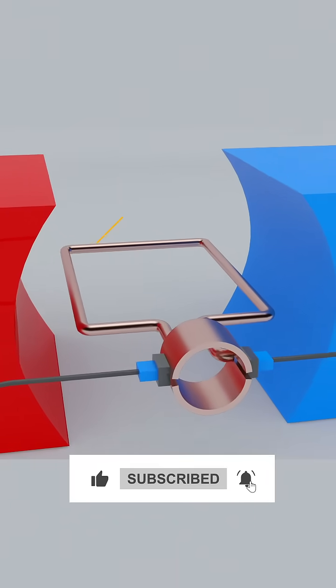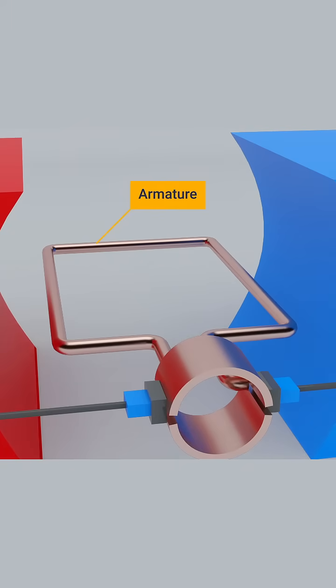At the core of every DC generator is the armature, a coil of wire that rotates within a magnetic field created by stationary magnets or electromagnets.